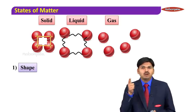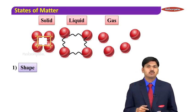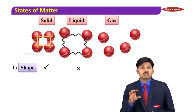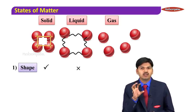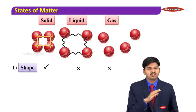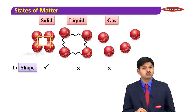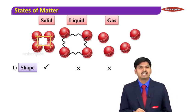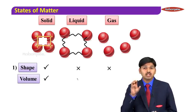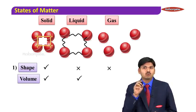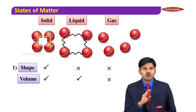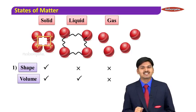Point number one — if I concentrate on shape: for solid, it is perfect. For liquid, there is no perfect shape. For gas, similar to liquid, there is no shape either. If I concentrate on volume: solid has volume, liquid has volume, but there is no volume for gases.